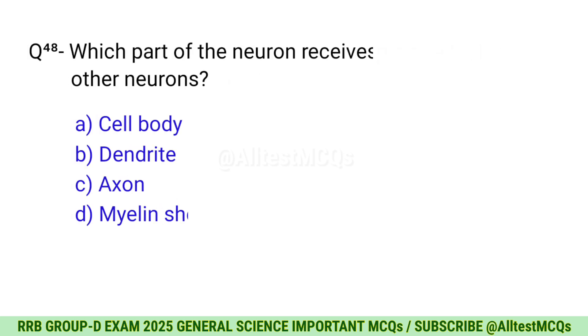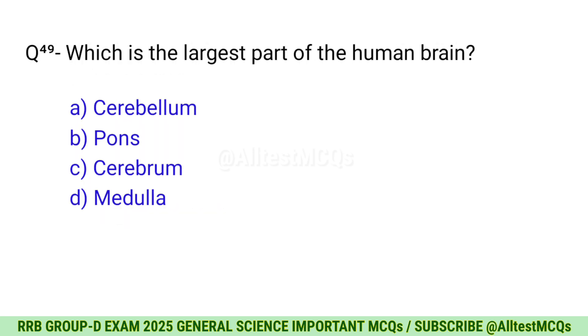Question 47: Which of the following is an example of a biotic component in an ecosystem? Correct option is D, Plants. Question 48: Which part of the neuron receives stimuli from other neurons? Correct option is B, Dendrite. Question 49: Which is the largest part of the human brain? Correct option is C, Cerebrum.